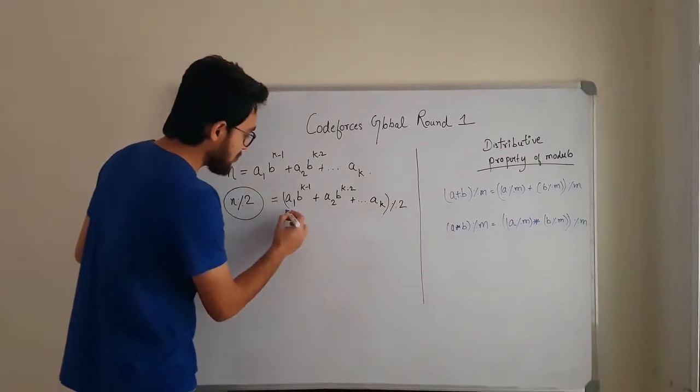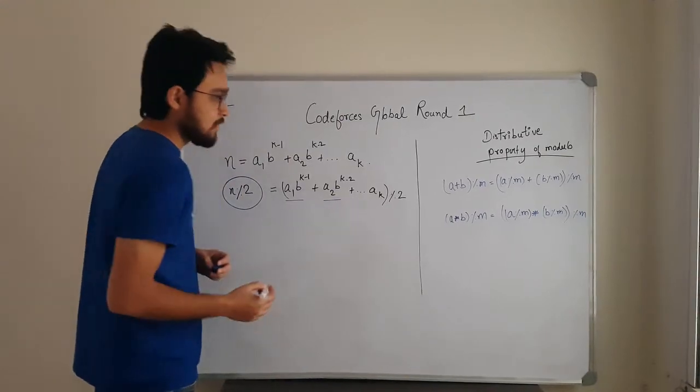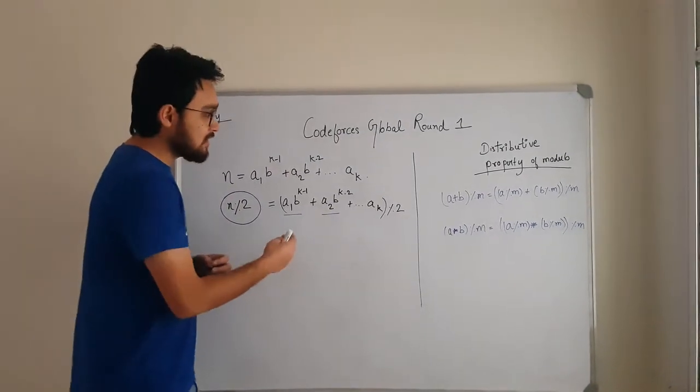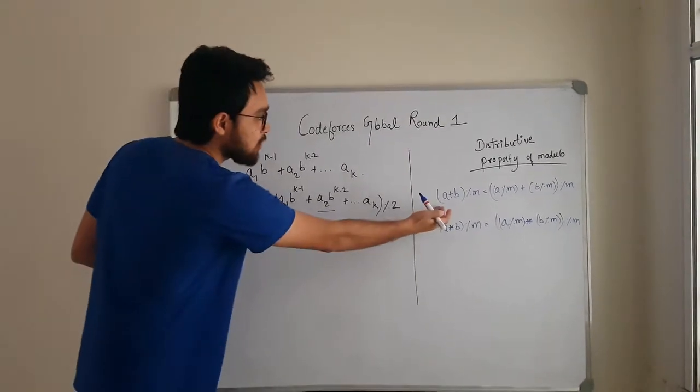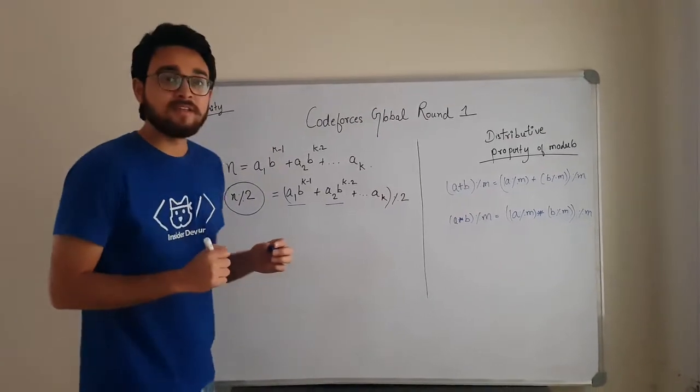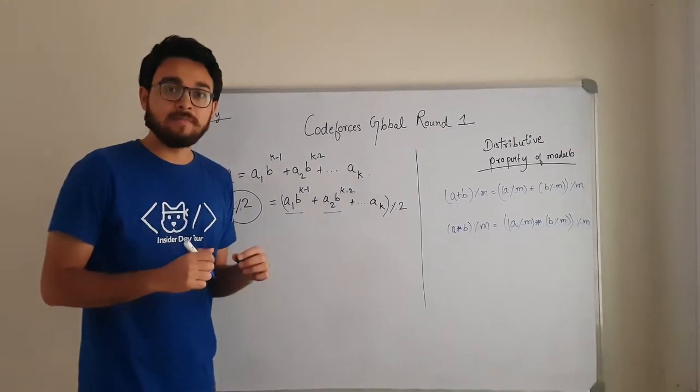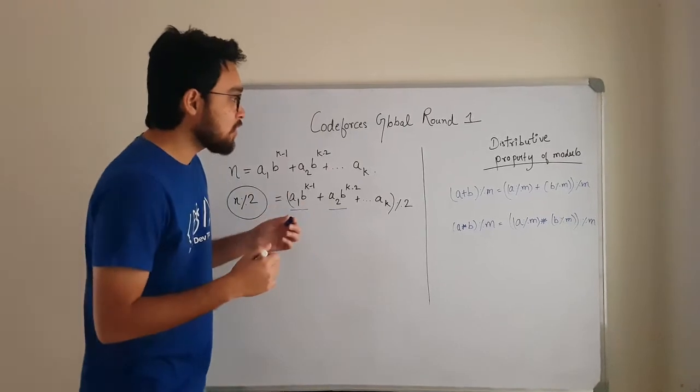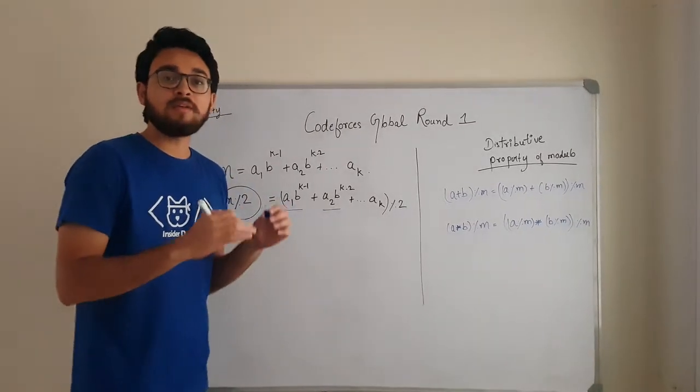Now you can see that we have summation terms here. So for these things we can use this property of modulo which says a plus b modulo m is equal to a modulo m plus b modulo m then that whole modulo m.